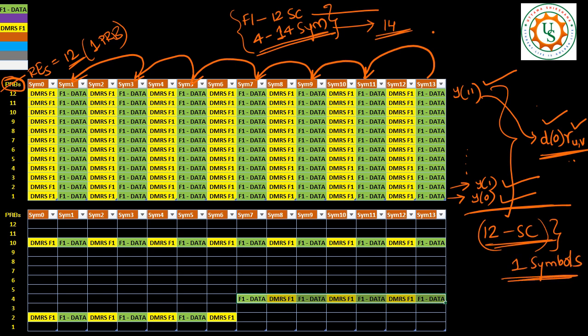So, in the remaining symbols, the same thing is replicated. As you can see here, the same thing is replicated on other symbols as well. Basically, the symbol 1, 3, 5, 6, 7, wherever we have this green data, all of them have the same information. So, the same information is repeated, which means there is more redundancy. So, this gives more robustness to your channel conditions.